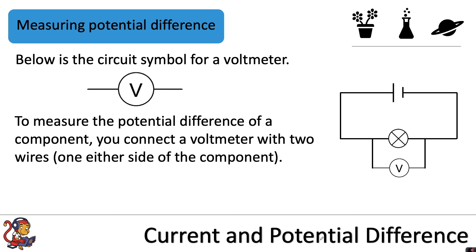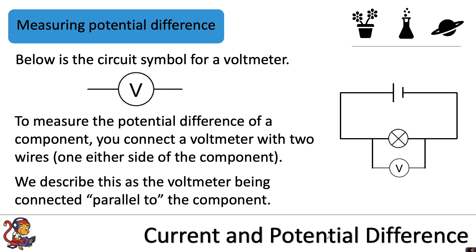To measure the potential difference of a component you connect a voltmeter with two wires, one either side of the component. We describe this as the voltmeter being connected parallel to the component.